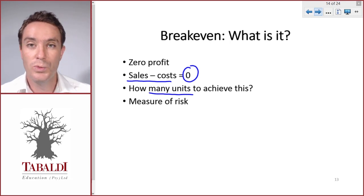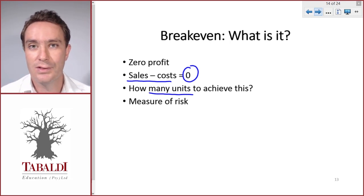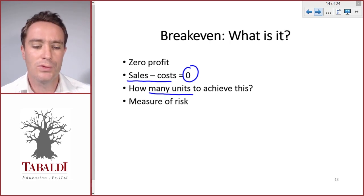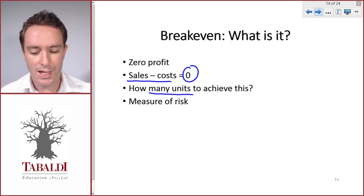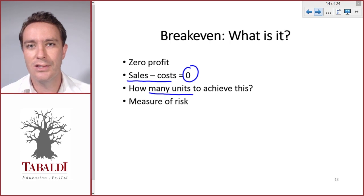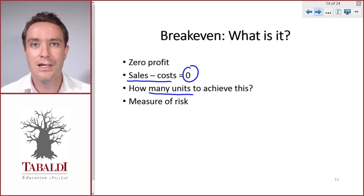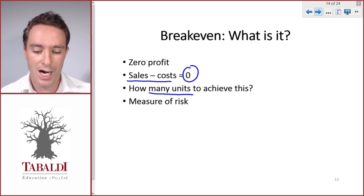Break-even calculates how many units we need to sell in order to achieve this zero profit. Why is this important? It gives us some measure of the risk involved in starting a new company, or if we look at our current sales, how risky is it?